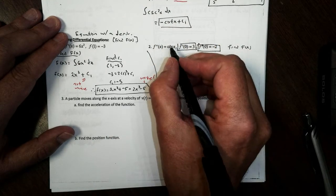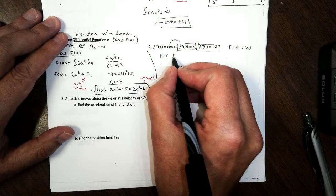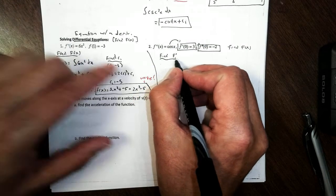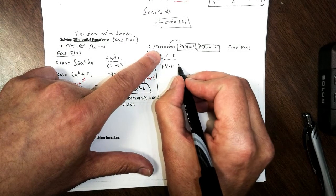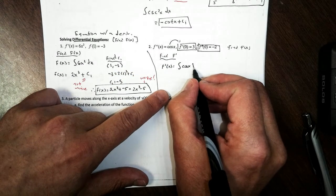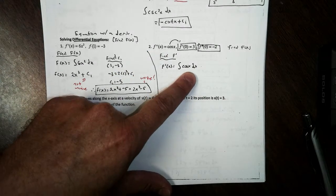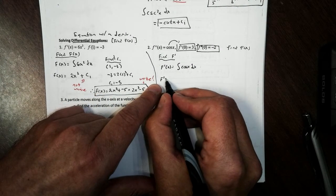The first thing we're going to find is the first derivative. To find my first derivative from my second derivative, we're going to integrate our cosine of x. Don't forget your dx. They're not going to tell you to put that there, but you need to remember to.